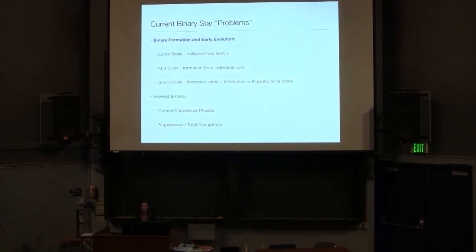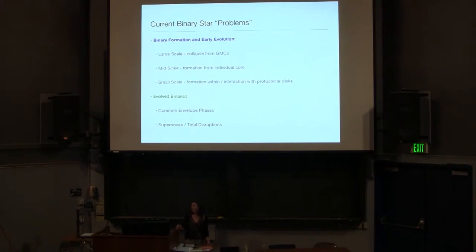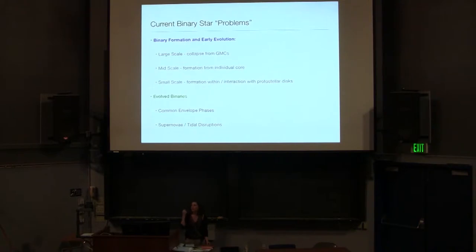The initial conditions are much denser than the typical giant molecular cloud, and so the inter-core and interstellar velocities are very high. One of the dominant ways that Bate's simulations reproduce the mass ratio and separation distributions is based on n-body interactions, and if you take a more typical low-mass star-forming region, you wouldn't expect that level of interactions.